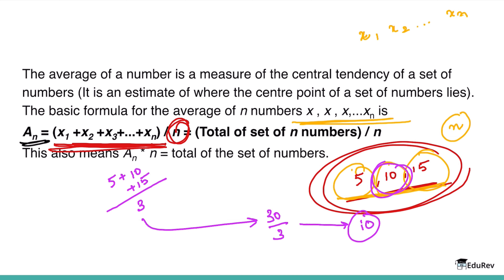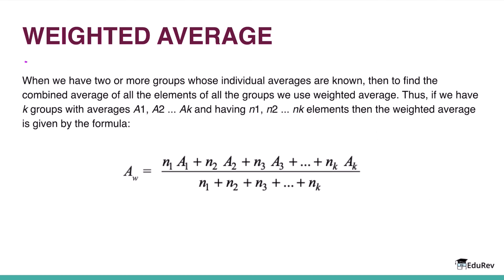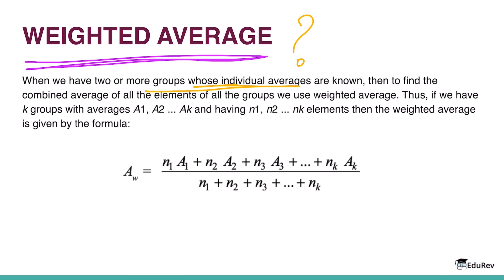In later slides, you'll get to know the properties of arithmetic mean with the help of an example — it's a very interesting one. Now let's discuss the concept of weighted average. We use weighted average when we have two or more groups whose individual averages are known and we want to find the combined average of all elements across all groups.